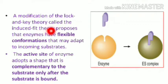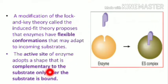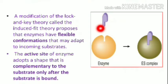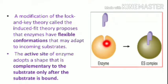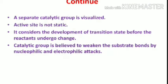The Induced Fit model insists on the flexible configuration of the enzyme's active sites. The active sites of the enzyme adapt a shape that is complementary to the substrate. After adopting this shape, the substrate gets bound, because the substrate has a predetermined size and configuration, and the enzyme itself modifies its active site configuration to join with the substrate, forming the ES complex.